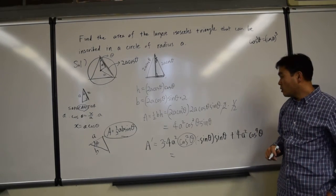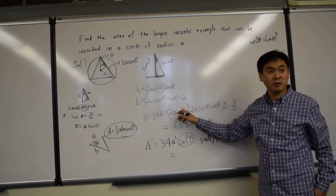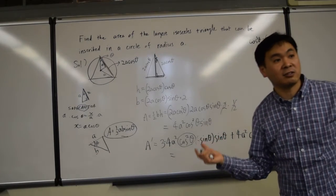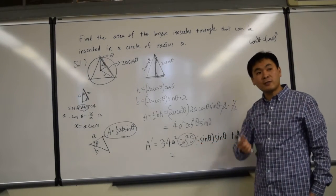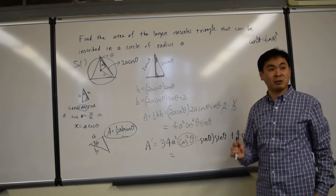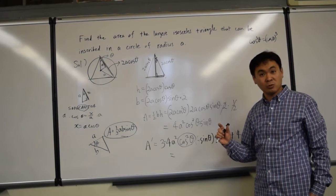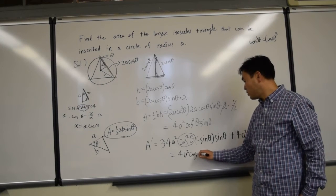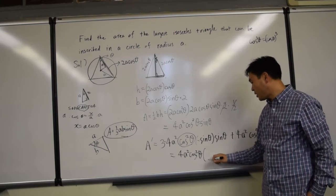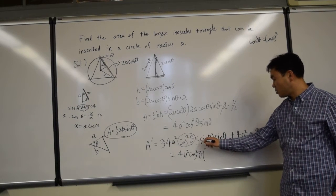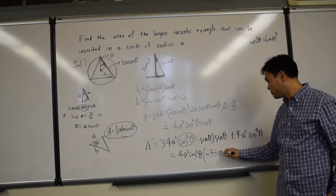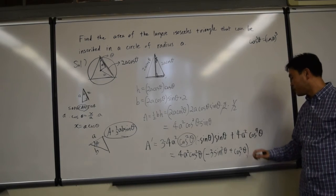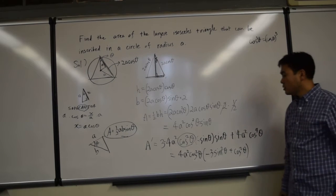The 4A squared is just a constant multiple from before — constant multiples stay, we don't differentiate them. Now, both terms have 4A squared and cosine squared as common factors. Factoring those out, we get 4A squared cosine squared theta times (negative 3 sine squared theta plus cosine squared theta).